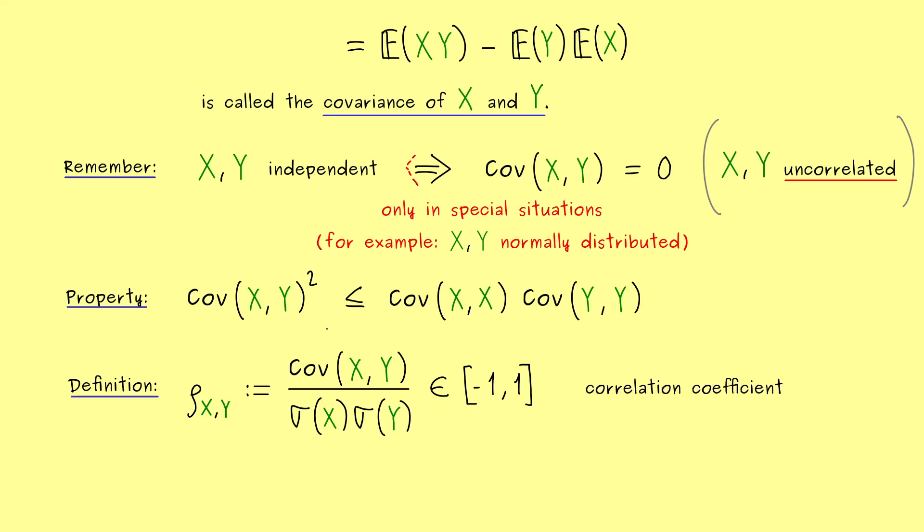And the usual symbol one uses for this number is a lowercase rho. And in the index we put the two random variables X and Y. Now, there are different names for this coefficient around, but I will simply call it correlation coefficient. Okay, and there you see, with that we now have a measurement that tells us how correlated two random variables are.